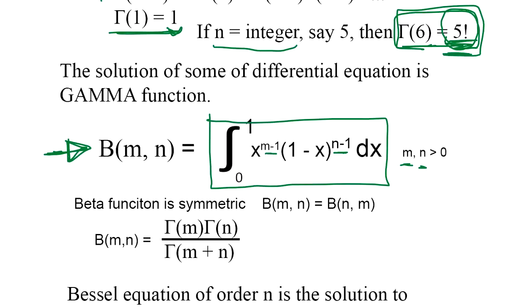The beta function is symmetric. We can swap m and n, and it's still the same beta function. Beta function definition, you should know, is expressed by the gamma function. Basically, gamma m times gamma n divided by gamma of m plus n. That's the beta function.